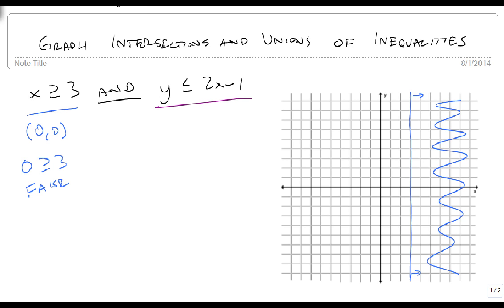For my second inequality, we're just treated like an equation, and it's already in the right form. So we're going to start at 1 and go up 2 over 1, and down 2 back 1, so we get a decently straight line. It's a solid line because it's an or equals.